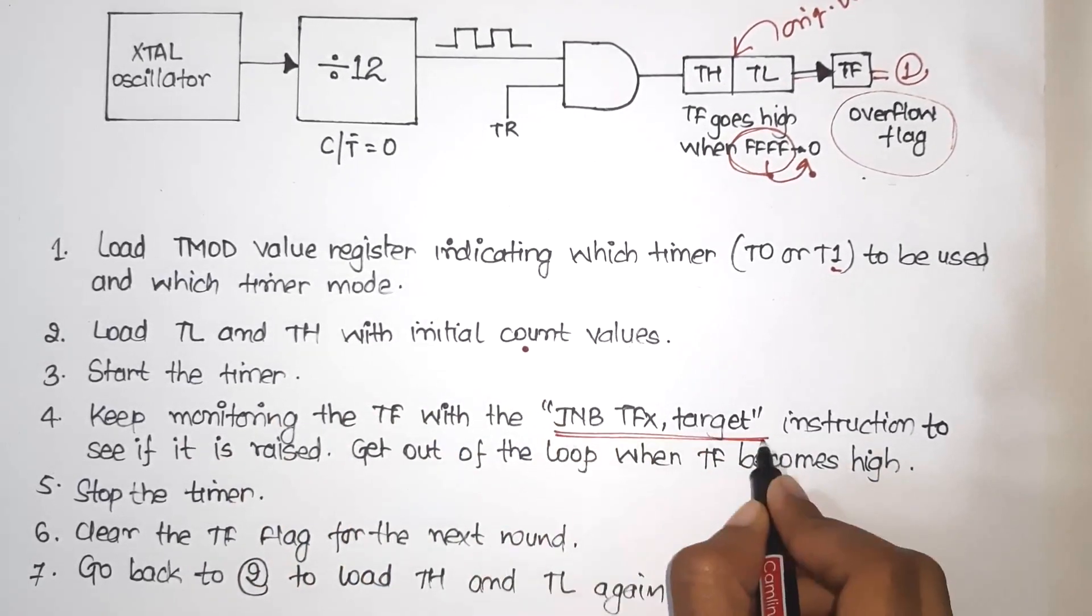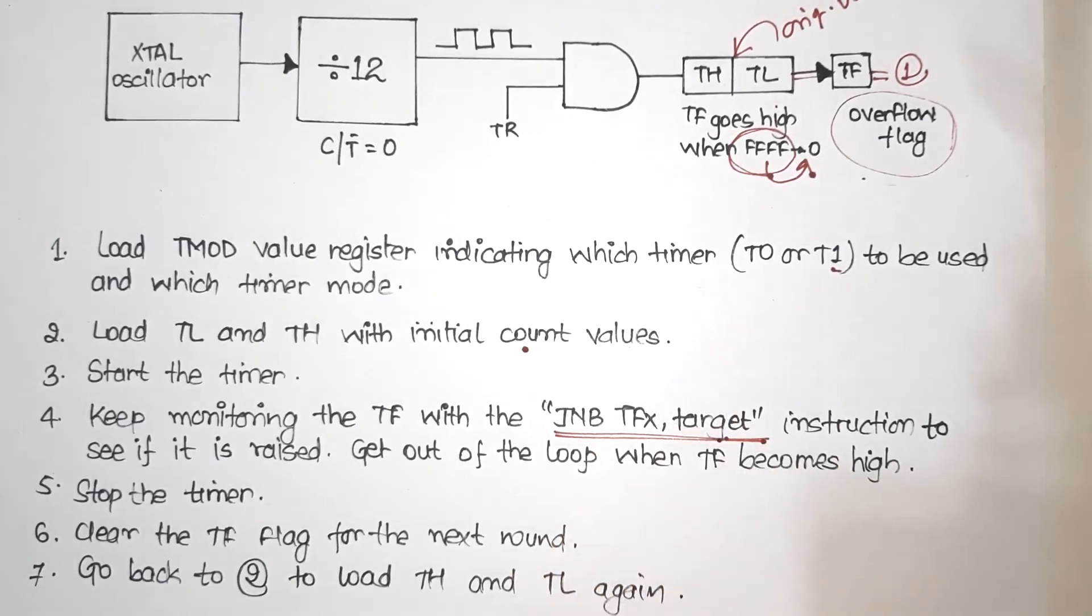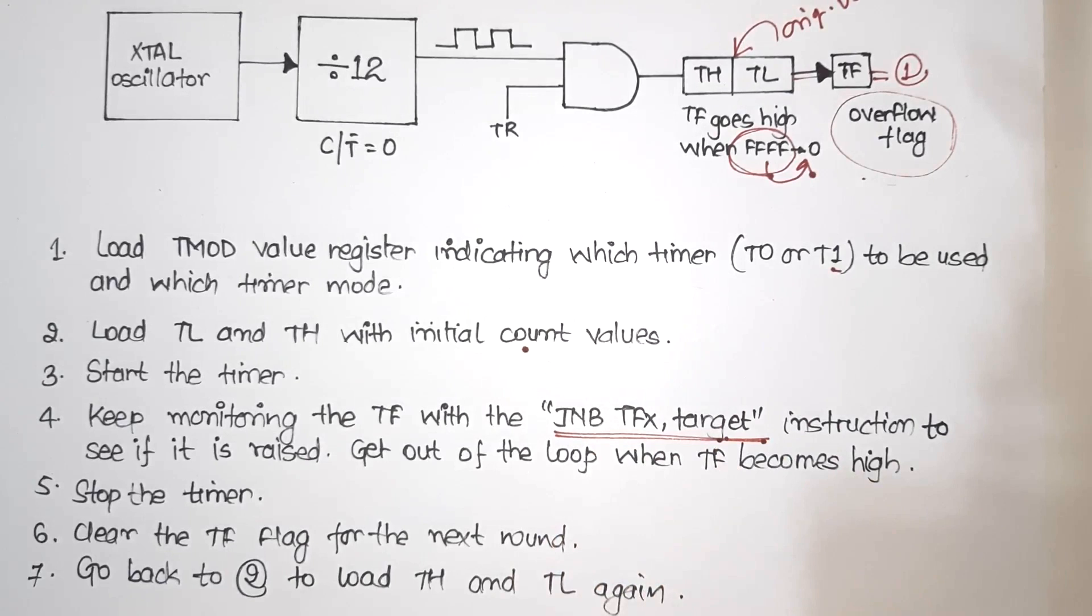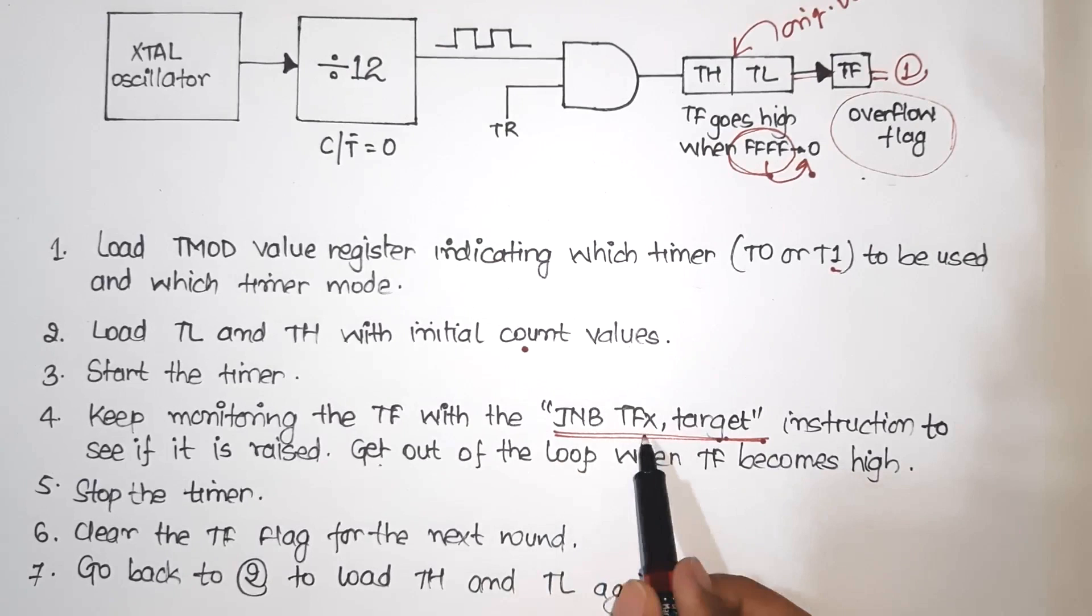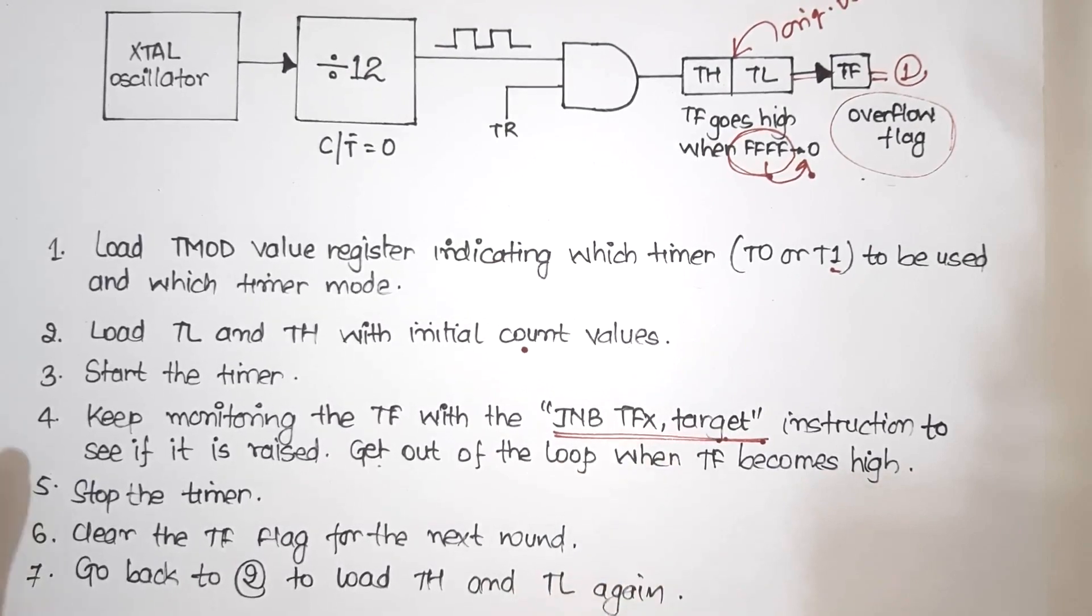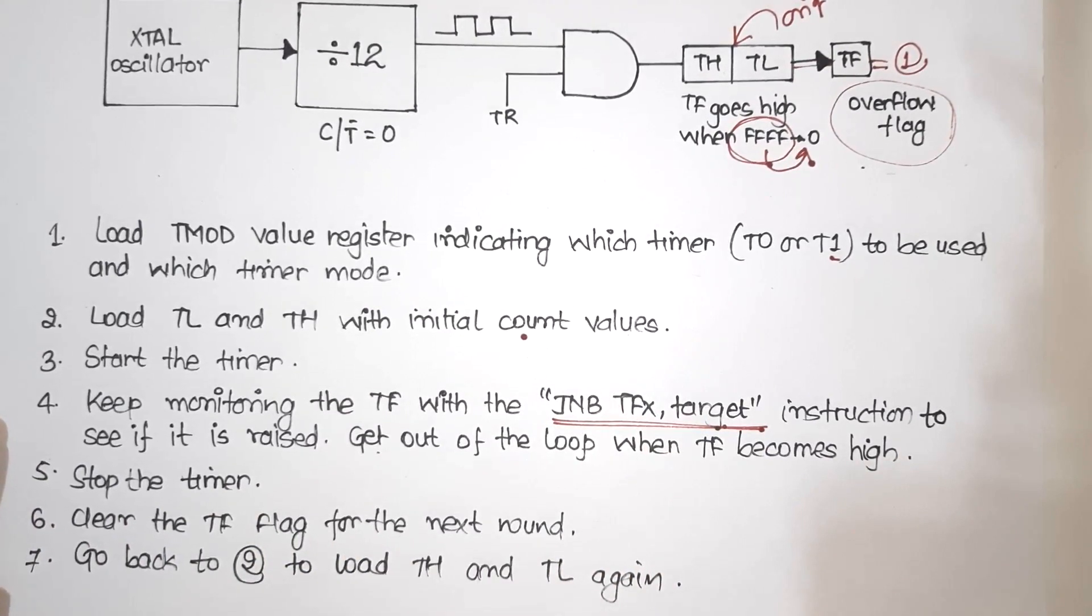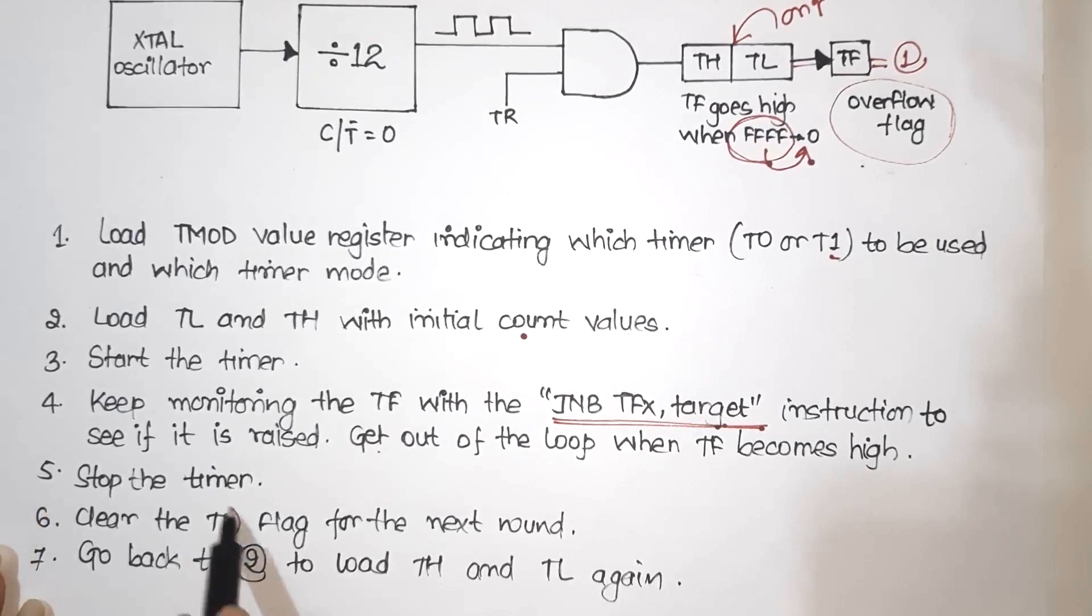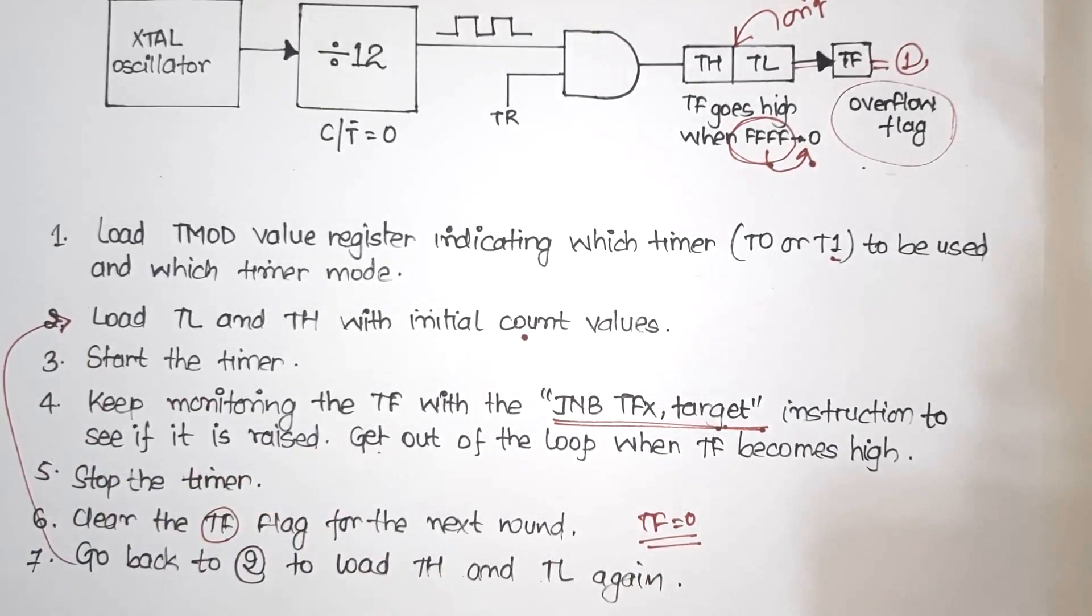So we have already studied about this instruction: JNB TF, Target. Target is a label. So it will keep on checking that TF is raised or not and get out of the loop when TF becomes high. Stop the timer. Clear the TF flag for the next round. So again, if you have to use it again, we have to set TF equal to 0. Go back to step 2 to load TH and TL again. So again, we have to follow the same process if we want to reuse it again. Otherwise, we will use clear instructions. So I hope you have understood what is mode 1 in timer.